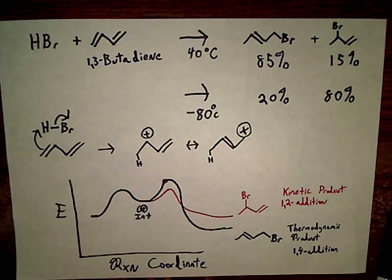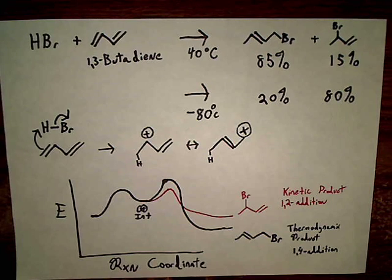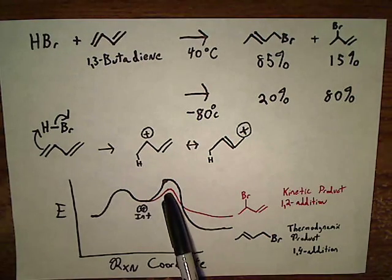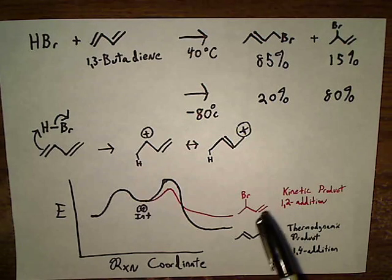And to figure out which one is going to attack, we're going to look at a potential energy diagram. And you can see here that we're going to have a lower activation energy for the kinetic product, they call it, the 1,2 addition product.